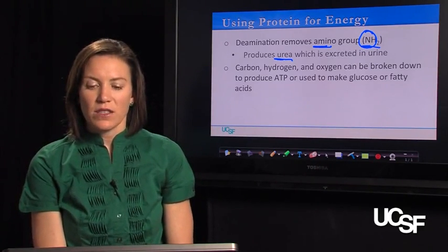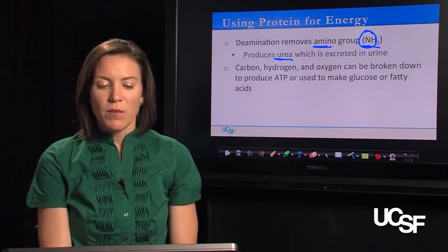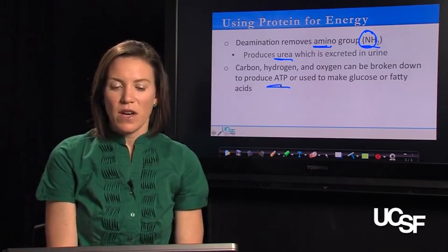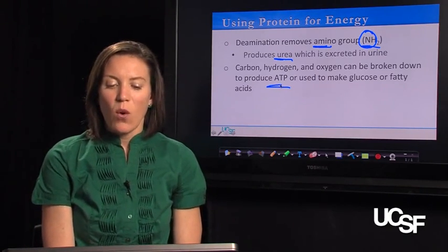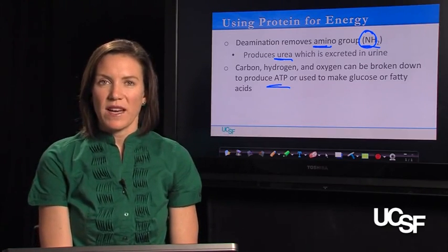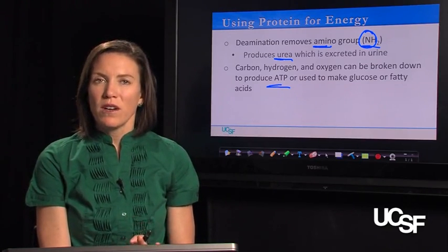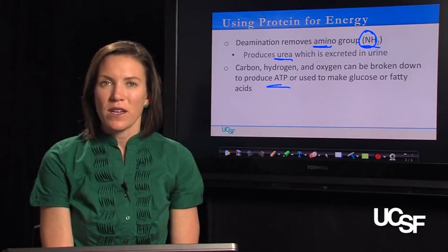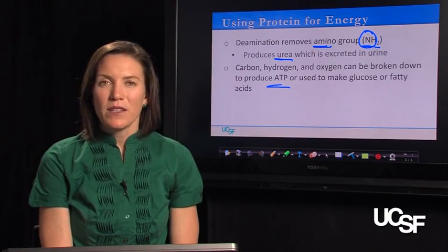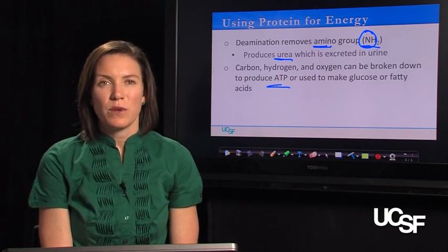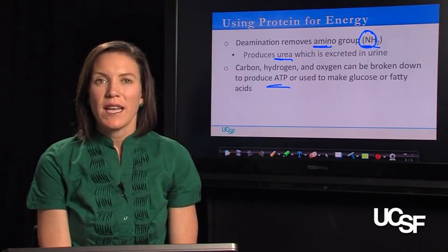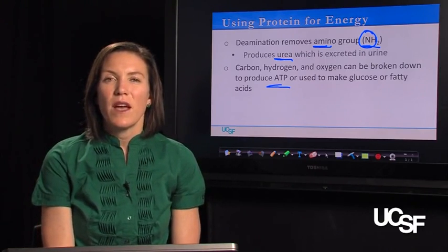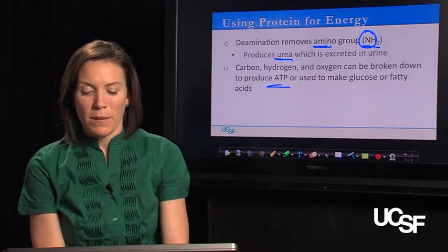Carbon, hydrogen, and oxygen can be broken down to produce ATP, which is a form of cellular energy, or used to make glucose or fatty acids. We would prefer that you get the majority of your calories from carbohydrate, but in extreme cases, if you need to use protein to provide energy, it can be done, although it occurs in a relatively metabolically inefficient way.